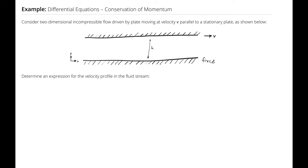Consider two-dimensional incompressible flow driven by a plate moving at velocity v parallel to a stationary plate as shown below. Determine an expression for the velocity profile in the fluid stream.